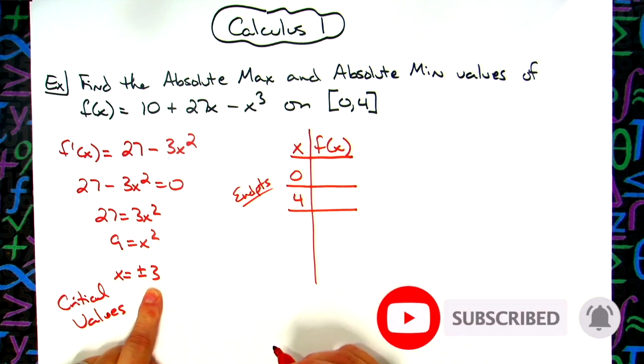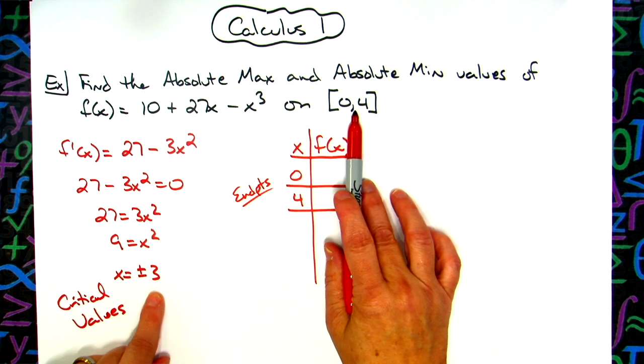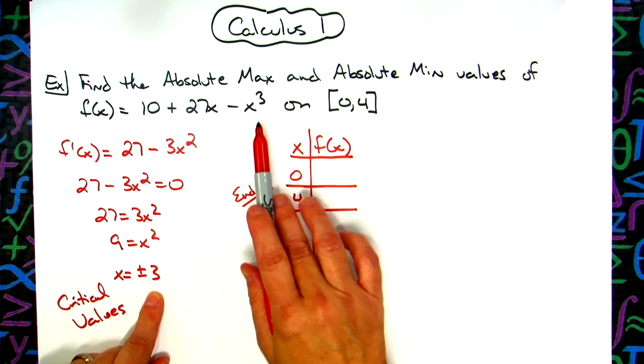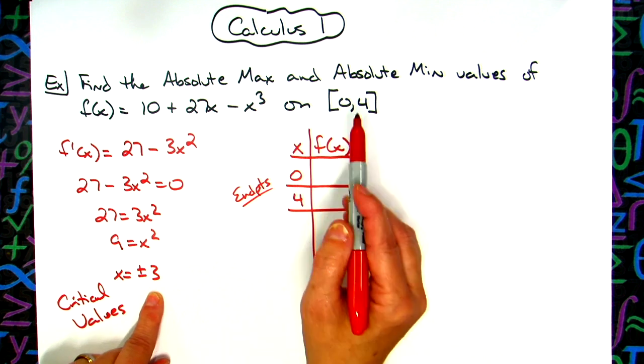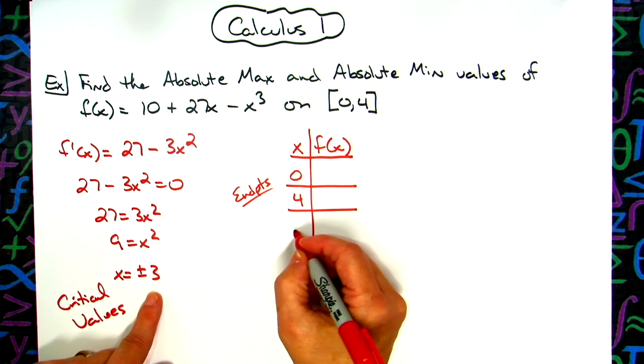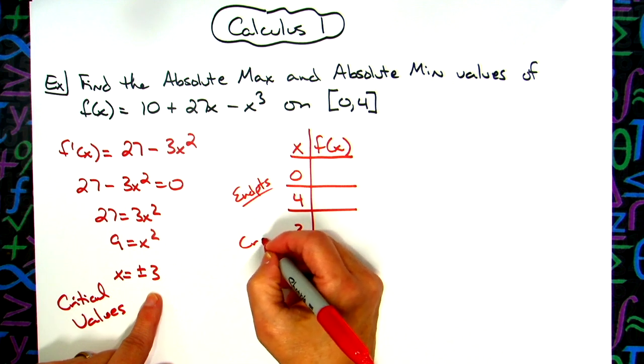Now critical values, I have plus or minus 3. Positive 3 falls in this interval. Negative 3 does not. Negative 3 falls outside the interval. So I do not have to test critical values that do not fall in that interval. So I only have to test 3 and that's my critical values.